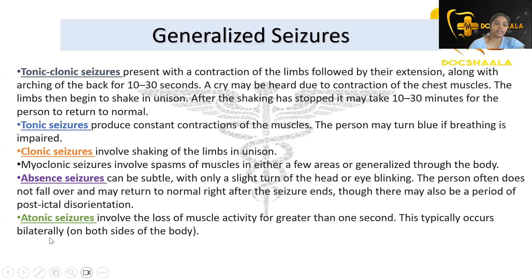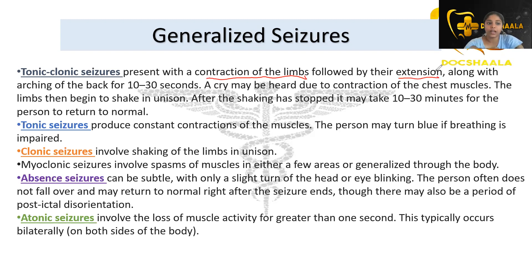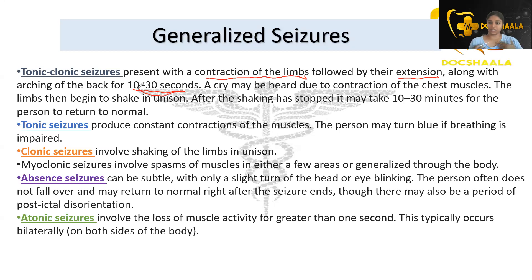Generalized seizures include tonic-clonic, absence, and atonic types. Tonic-clonic seizures present with contraction of limbs followed by extension along with arching of the back for 10 to 30 seconds; a cry may be heard due to contraction of chest muscles, and the limbs begin to shake in unison. After the shaking stops, it may take 10 to 30 minutes for the person to return to normal. Tonic seizures produce constant muscle contractions; the person may turn blue if breathing is impaired. Clonic seizures involve shaking of limbs in unison.